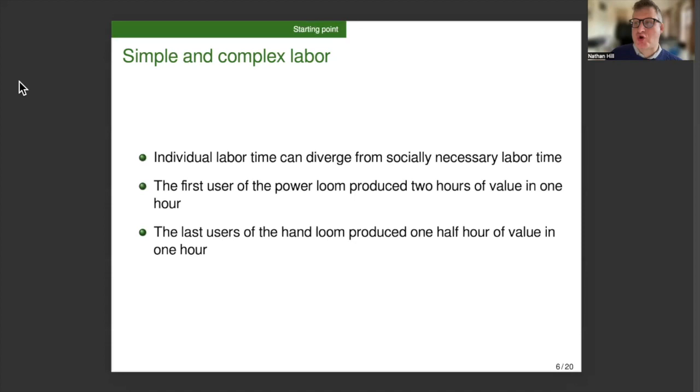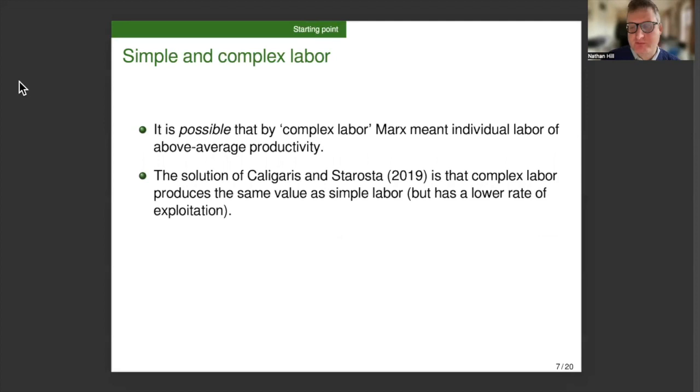So it is possible that by complex labor, Marx meant individual labor of above average productivity. The solution of Caligaris and Starosta is that complex labor produces the same value as simple labor, but has a lower rate of exploitation because complex labor is paid more. I think that both of these solutions are logically OK, and the rest of my presentation doesn't hang on this difference.